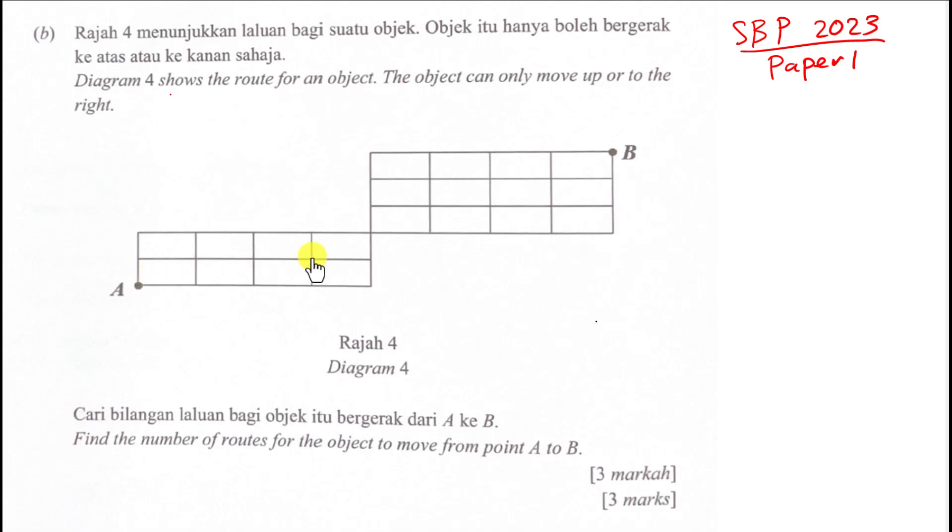So the first idea is they actually show a route for an object. The object can only move up or to the right. And then they ask us to find the number of routes for the object to move from point A to point B. So eventually I must reach B.